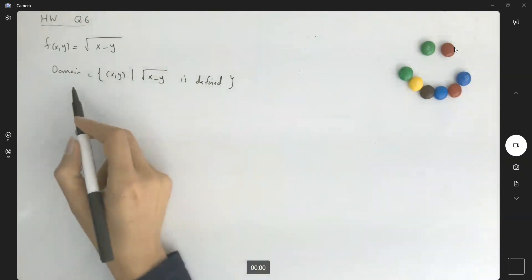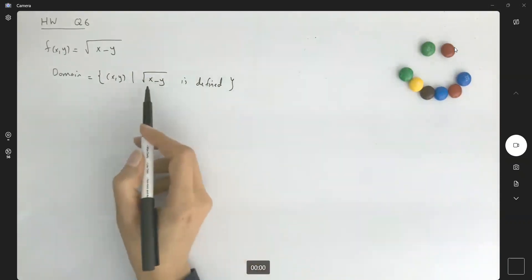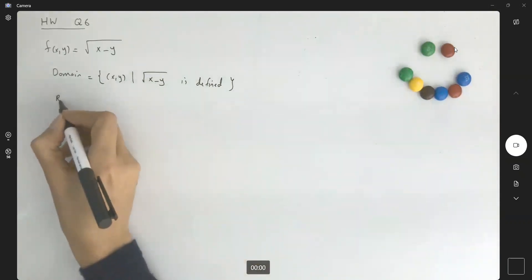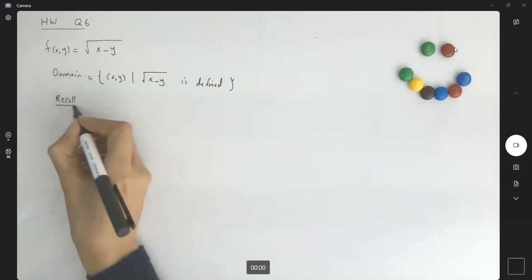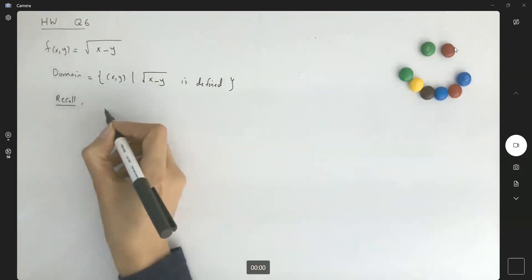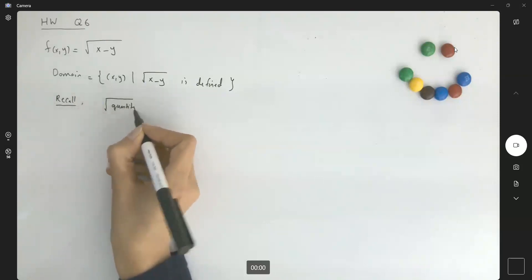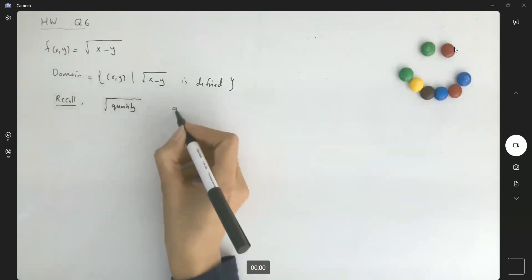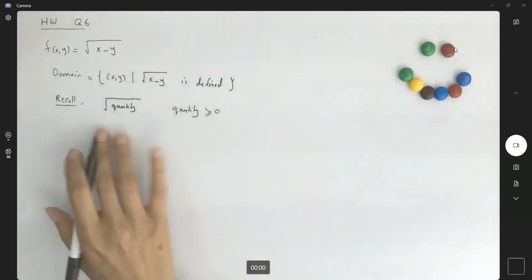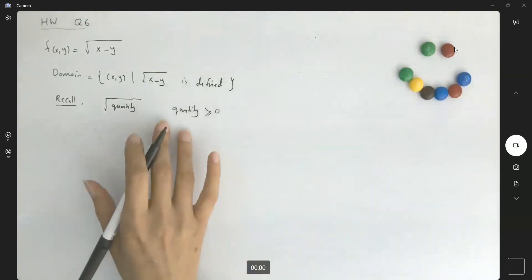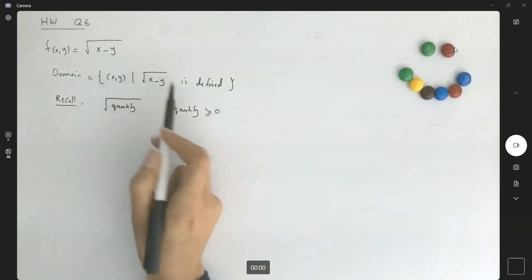Remember, the domain is the set of all input values. So let us go back to elementary calculus. If you have the square root of any quantity for the domain, the quantity must be larger than or equal to zero. There is no difference between elementary calculus and multivariable calculus.